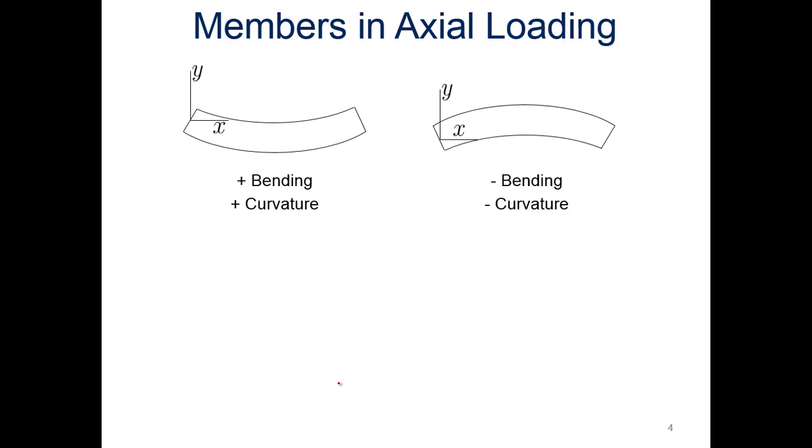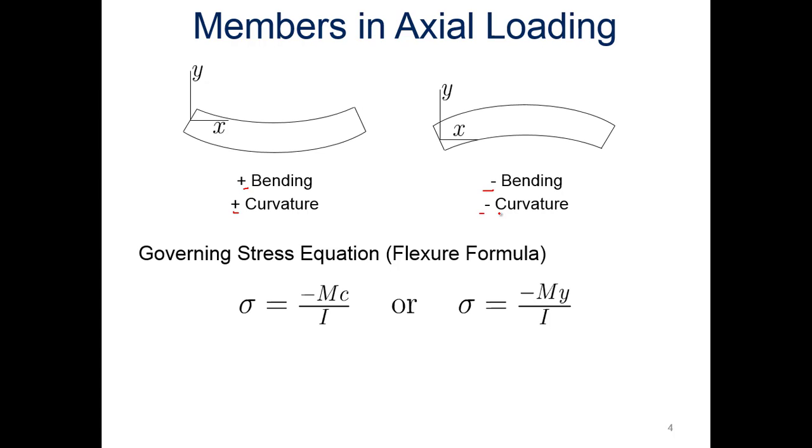For members that are in axial loading, if it's a happy face, so if you see it smiling here, we'll have positive bending and positive curvature. If it's got the frown, we call it negative bending and negative curvature. So those are the conventions we'll be using.